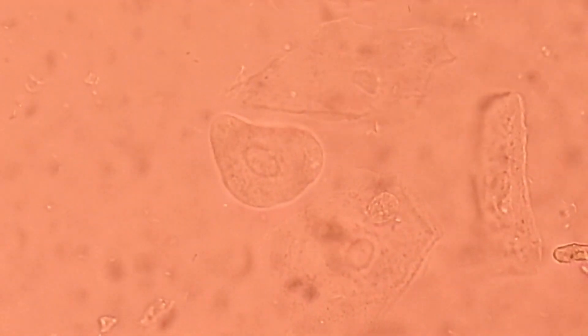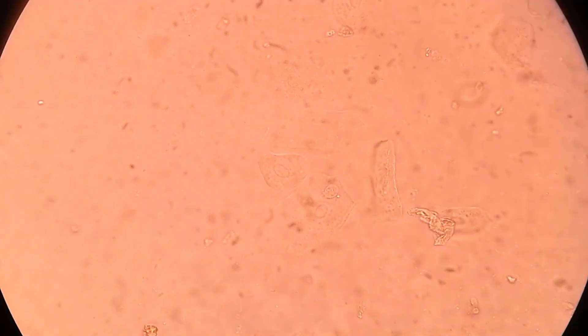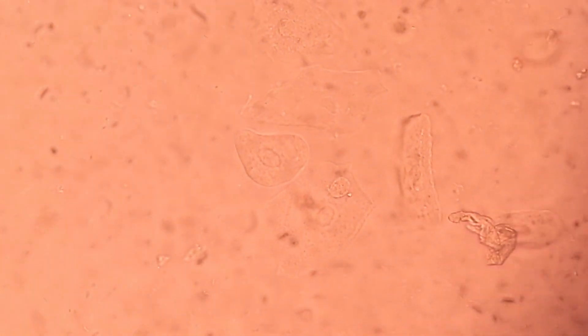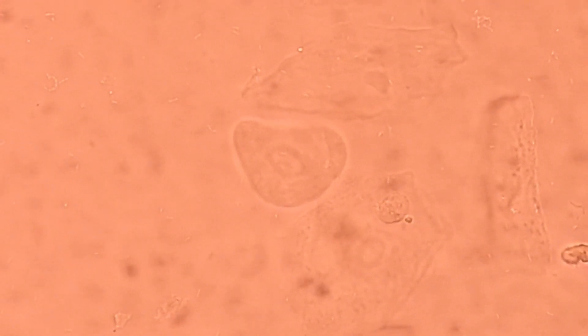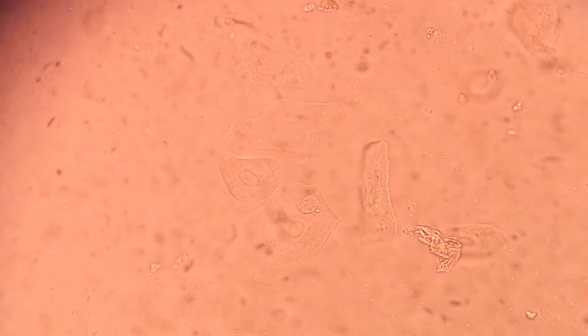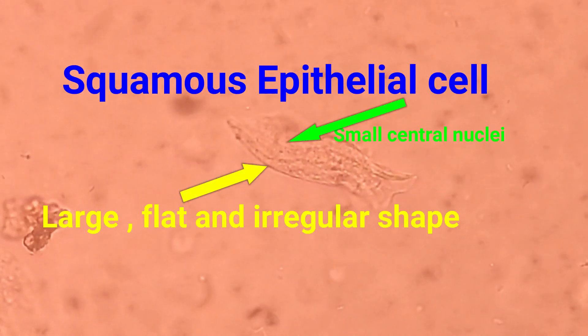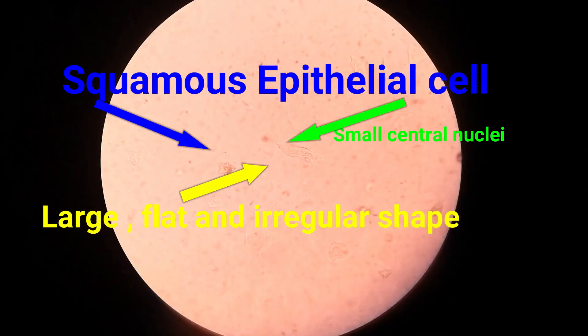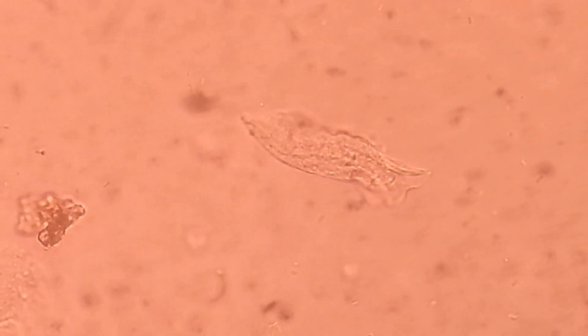There are three main types of epithelial cells: squamous epithelial cells, tubular epithelial cells, and transitional epithelial cells. Squamous epithelial cells are large, flat, and irregularly shaped. They contain abundant cytoplasm and a small central nucleus.